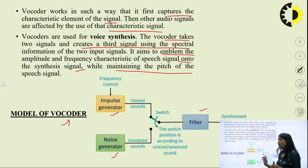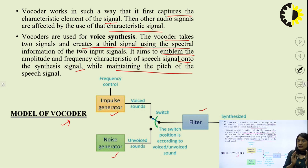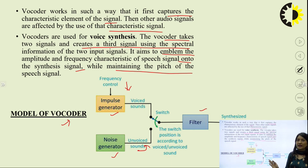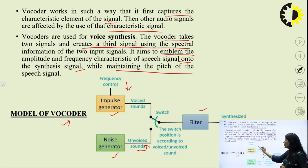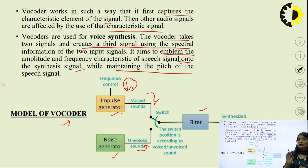In the model, we have an impulse generator and a noise generator, and we have a filter. In our voice signal, we have some voiced sound and some unvoiced sound. Voiced sounds are produced by the frequency we can provide, and unvoiced sounds are produced by noise generation. We are generating the equivalent model of how our speech is produced. The voiced data of a particular utterance will be converted into the equivalent waveform using a frequency control, for which we have the impulse generator.